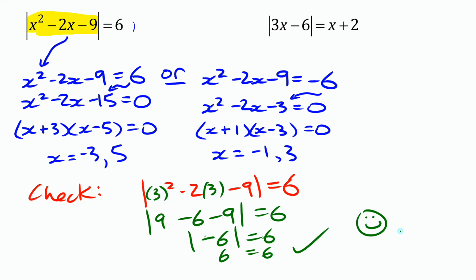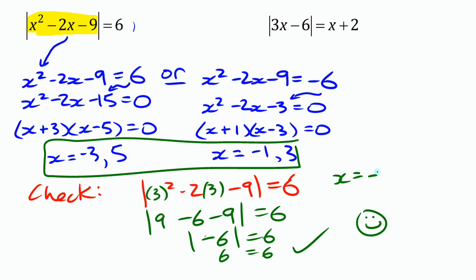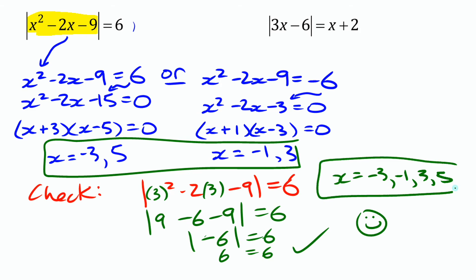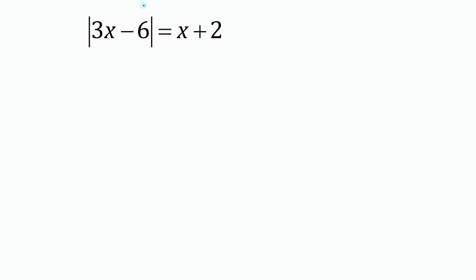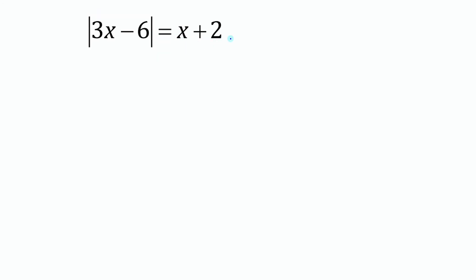So they all work — all four of these work — so those are your solutions. In order: negative three, negative one, three, five — four valid solutions. Now here we have absolute value of an expression equals another expression, so that's different from what we've done so far where there was a numerical value on the right side. We can take the same approach and split it into different cases.